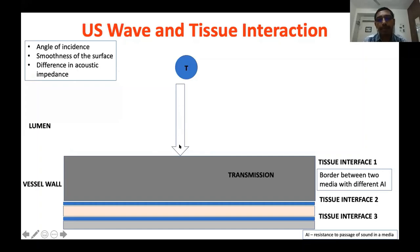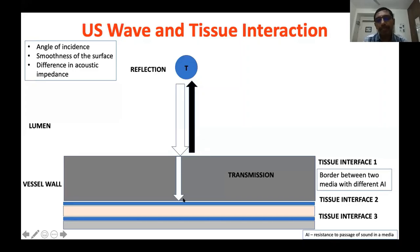Here you can see an example where the ultrasound signal is perpendicular to a smooth, regular surface. This results in all reflected waves going back in the same direction to the transducer — almost all waves return to the transducer. Further transmission of the wave into the next interface is determined by the acoustic impedance difference between the two media. If the impedance difference is very large, most ultrasound waves get reflected from the first interface itself, and less passes to the next interface. If the difference is small, most waves pass through to the next interface.